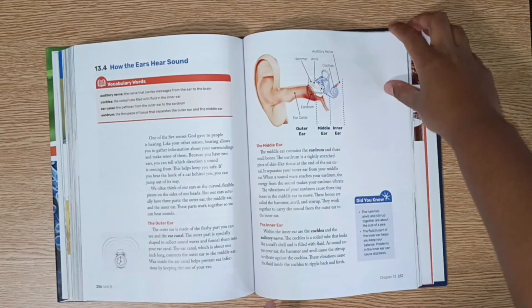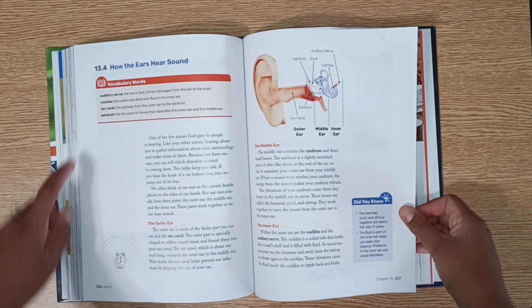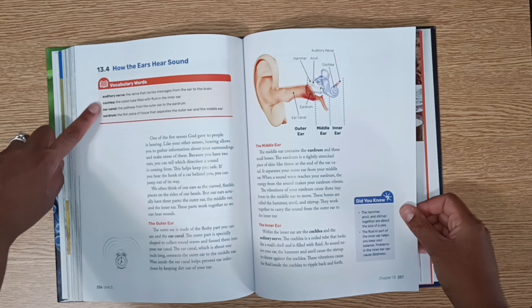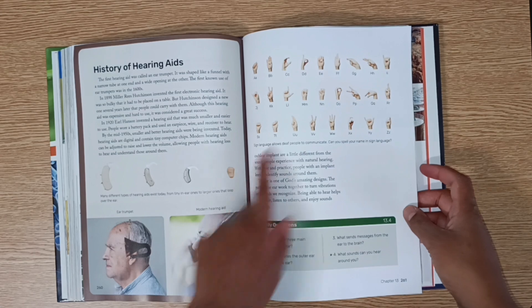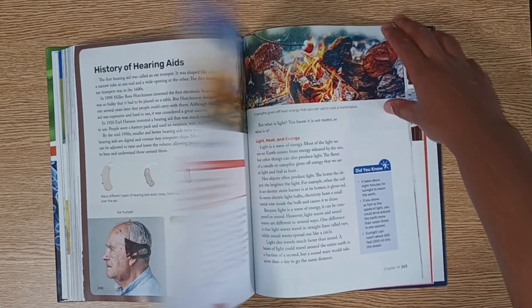And here's another example of how the ears hear sound. Tells you about the auditory nerve, the cochlea, ear canal, eardrum, how hearing works, hearing loss and protection, history of hearing aids, a little bit about sign language.